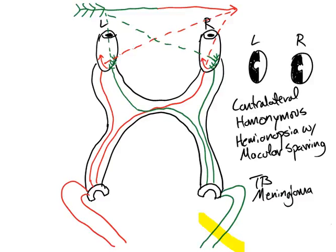That's pretty much all the boards expect you to know — it's literally that simple. They might ask you about the parietal or temporal lobe, or where TB, a meningioma, or a craniopharyngioma can infect, so associate those. But if they give you these scenarios, they just want you to understand it on this basic level. These are very easy points — don't miss these. Best of luck to you.